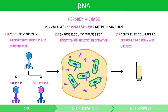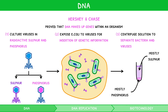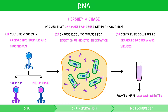When centrifuging the solution, the bacteria form a solid pellet at the bottom of the test tube, whereas the components in the extracellular matrix remain suspended in the fluid supernatant. They found that the sulfur was mostly radioactive in the supernatant, and that the phosphorus was mostly radioactive in the solid pellet. Since phosphorus is found in DNA, they therefore proved that the viral DNA was inserted into the bacterial cells, and thus genetic information must be made of DNA.